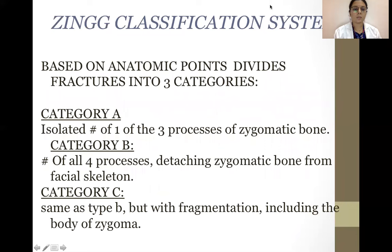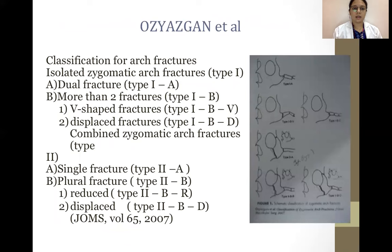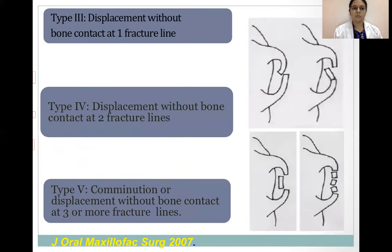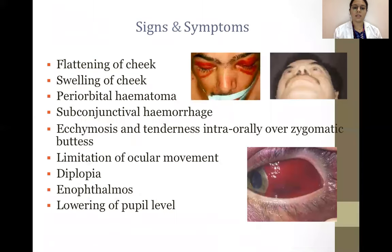The Zingg classification: based on anatomic points, divided into three categories — Category A, isolated fracture of one of the three processes; Category B, fracture of all four processes; Category C, same as Type B but with fragmentation including the body of the zygoma. The Aussie-Yagzan classification for arch fractures: isolated zygomatic arch fractures, dual fractures, more than two fractures, V-shaped fractures, displaced fractures. A new proposed classification of zygomatic arch fractures: Type 1 isolated with subdivisions including dual or more than two fractures; Type 2 combined zygomatic arch fractures.